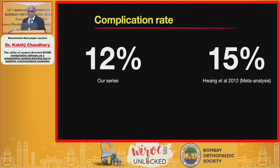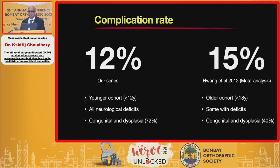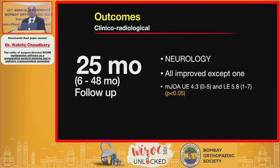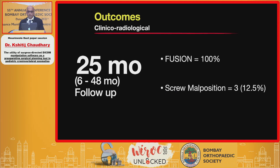Overall, the complication rate in our series is 12 percent, comparable to the approximately 15 percent reported in the literature. Our complications appear fewer despite having a younger cohort, most of whom had neurological deficits or congenital and dysplastic anomalies. However, it is difficult to conclude from such comparison alone that MPR helped reduce complications. All patients improved neurologically except one who had post-operative worsening. There were no non-unions, and three patients had minor screw malpositions without any problems.